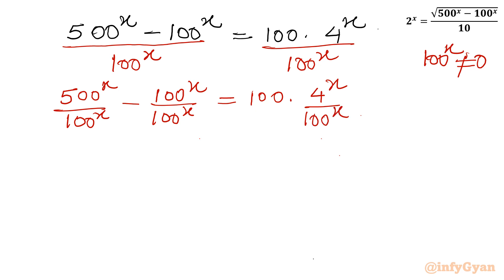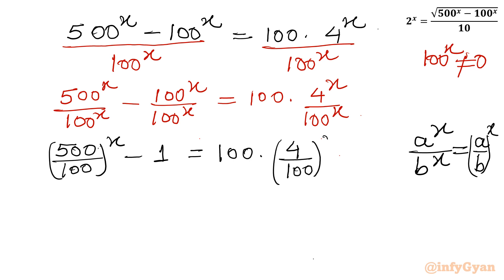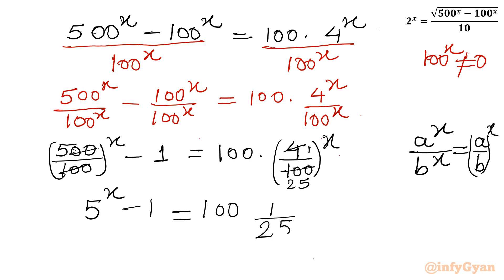I will apply property number 2 in RHS, and in LHS applying a^x / b^x = (a/b)^x. So I write (500/100)^x - 1 = 100 × (4/100)^x. Cancelling zeros: (500/100) = 5, and (4/100) simplifies — cancelling by 4 gives 1/25. So it becomes 5^x - 1 = 100 × (1/25)^x.